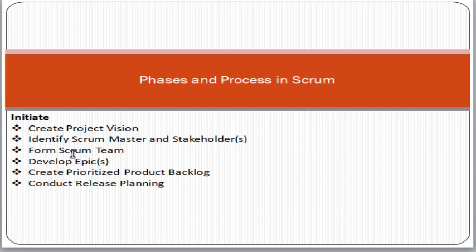Then we form the Scrum Team. The Scrum Team is the core team — software engineers, software developers, quality engineers, production and deployment engineers — the core team who is implementing the project. Then we develop the Epic. An Epic is a high-level story or user requirement; for example, developing an e-commerce solution is an Epic.